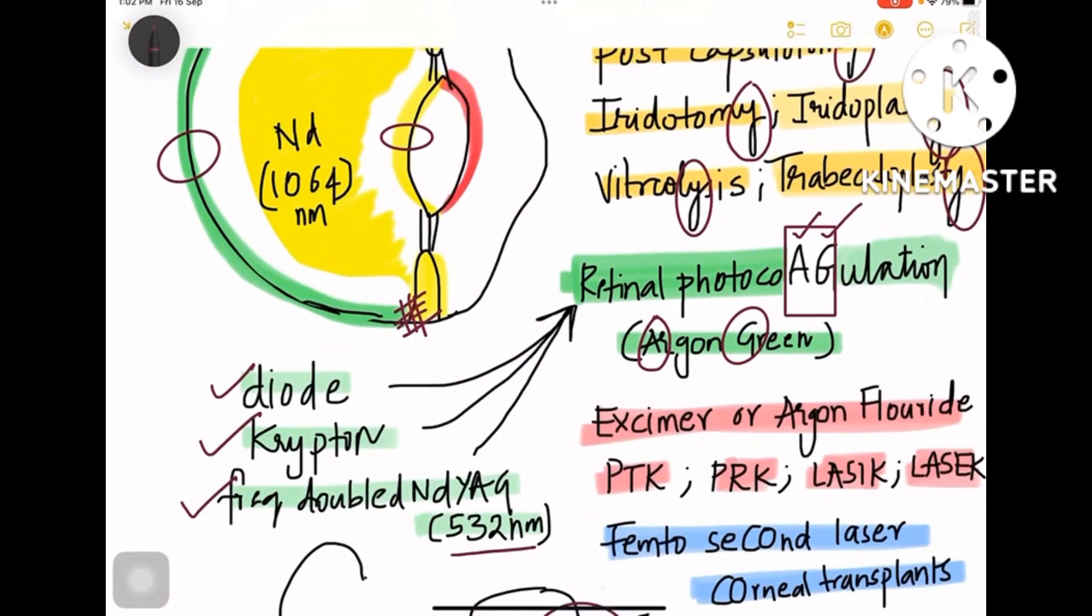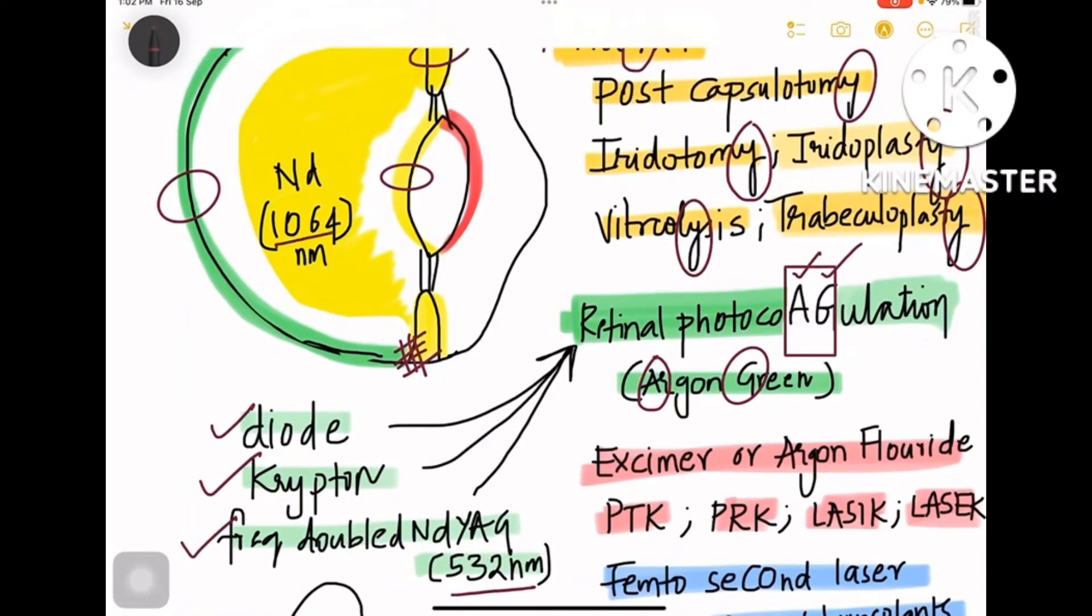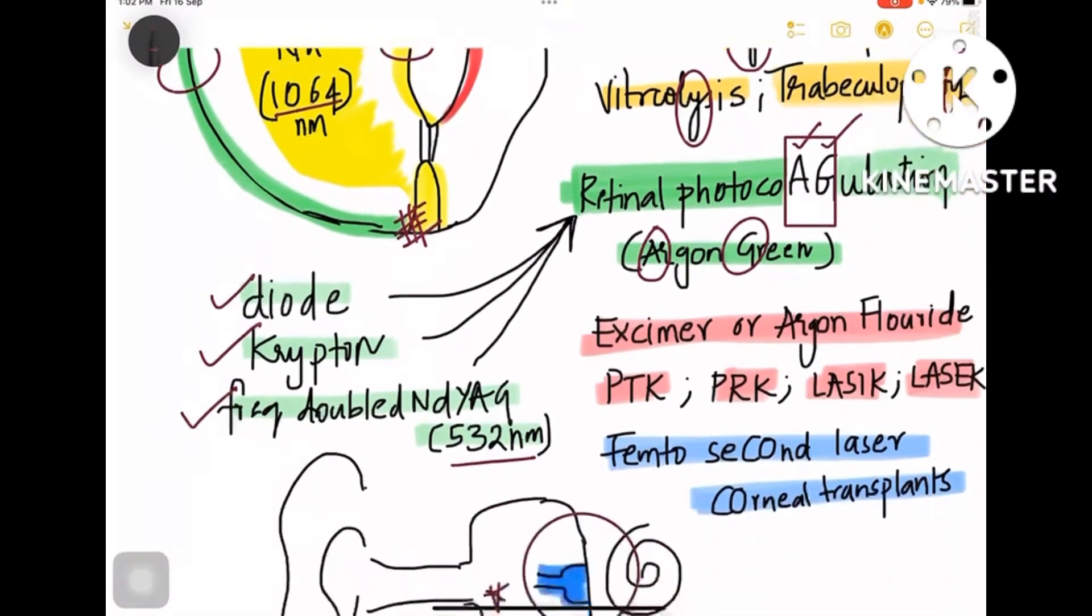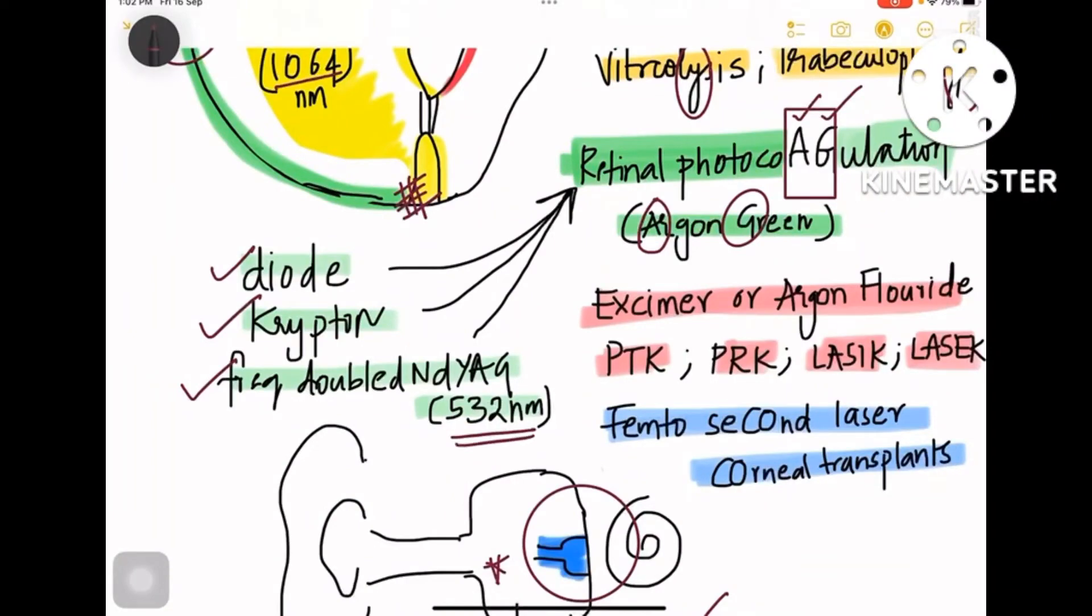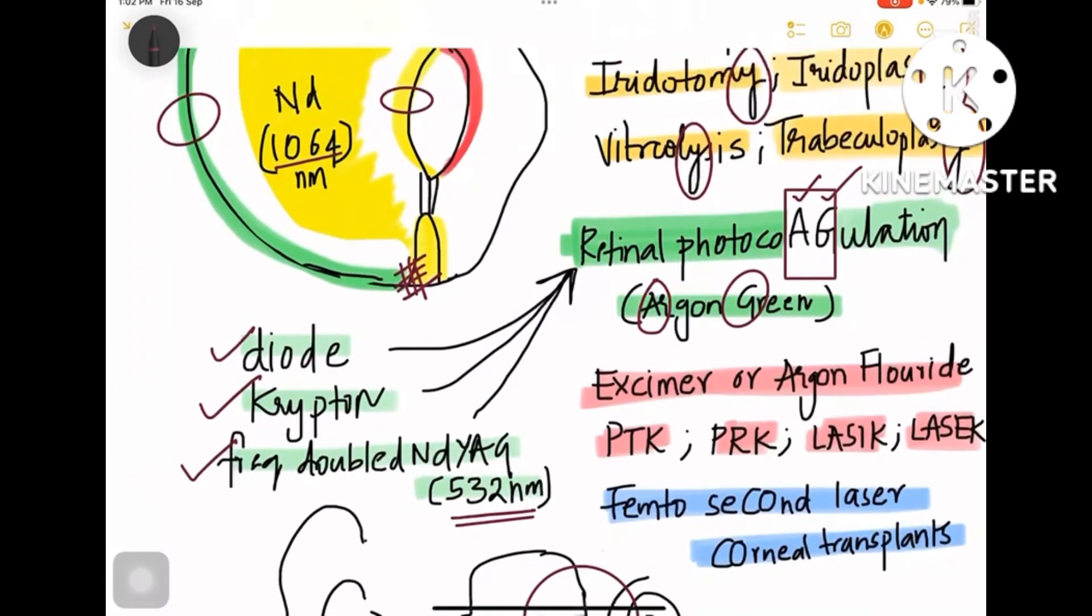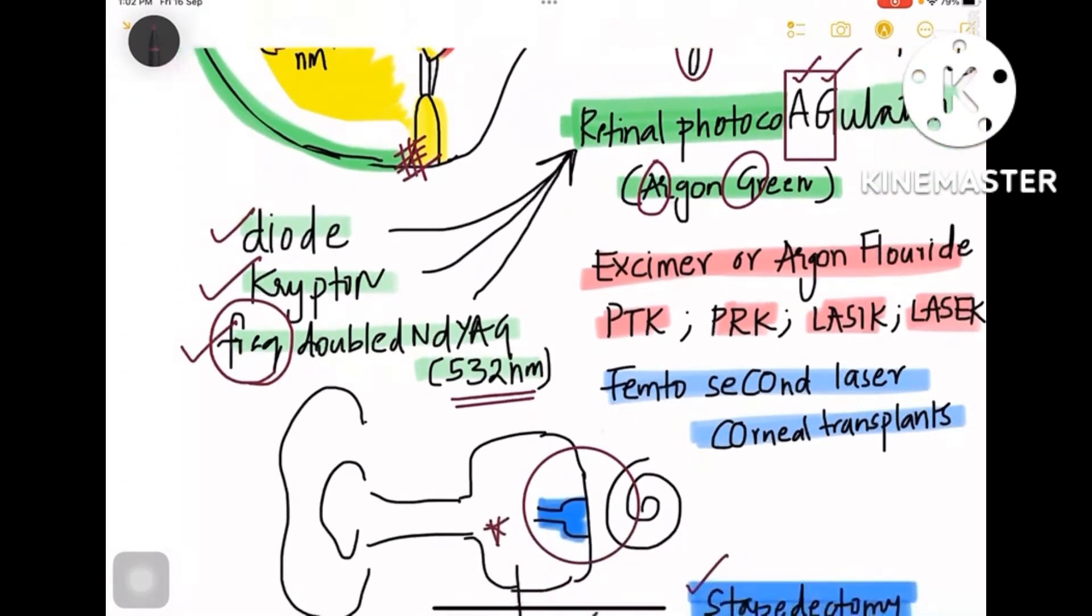First Nd:YAG is about 1064 nanometers wavelength, and frequency doubled is 532 nanometers, because whenever you double the frequency you reduce the wavelength to half. So 1064 is for Nd:YAG and 532 nanometers is for frequency doubled Nd:YAG.